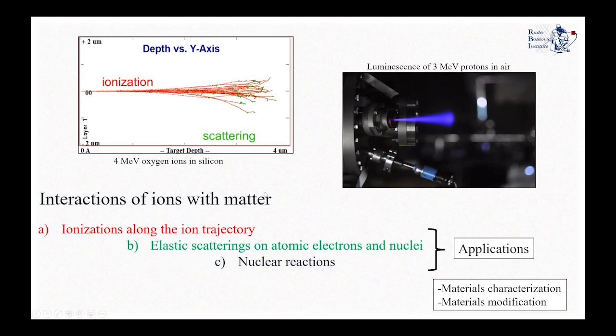These interactions are the basis for applications with ion beams. The main applications can be categorized in two big categories: materials characterization, where the beam is used to study and characterize materials, or material modification, where the beam is used to alter materials.